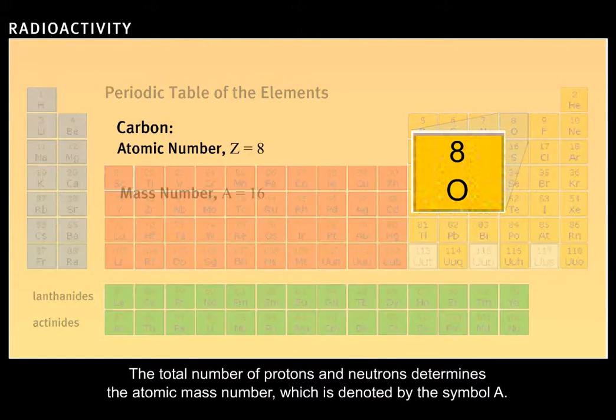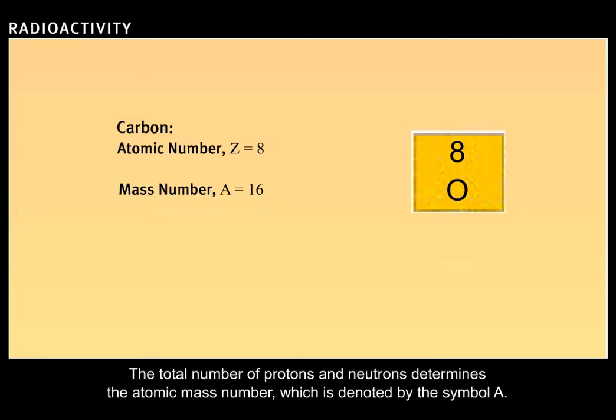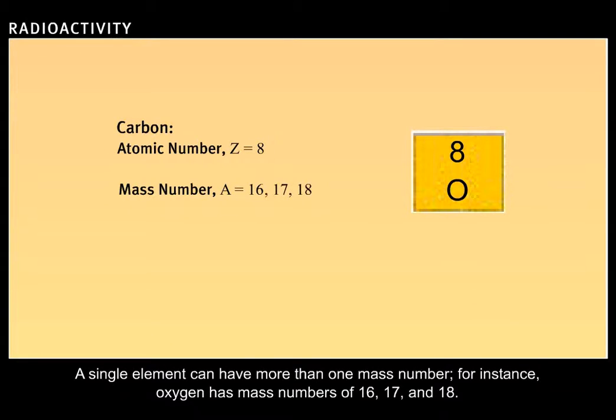The total number of protons and neutrons determines the atomic mass number, which is denoted by the symbol A. A single element can have more than one mass number. For instance, oxygen has mass numbers of 16, 17, and 18.